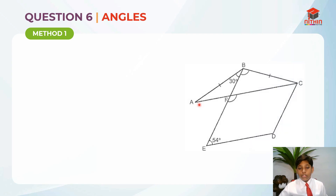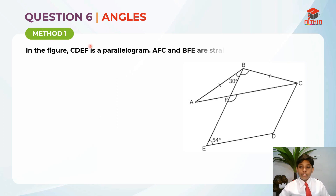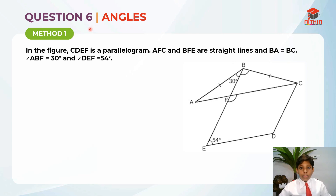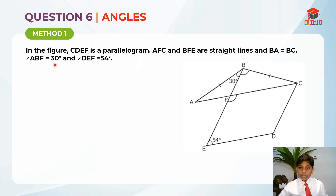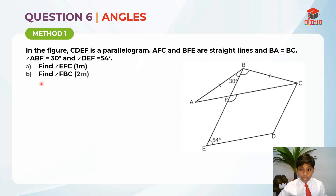Question 6 is testing us on the topic of angles and this question has two methods to solve it. I'll be going through method 1 right now and method 2 later in this video. So the question states: CDEF is a parallelogram, EFC and BFE are straight lines, and BA equals BC. Angle ABF equals 30 degrees and angle DEF equals 54 degrees. Part A asks us to find angle EFC (1 mark) and part B asks us to find angle FBC (2 marks).